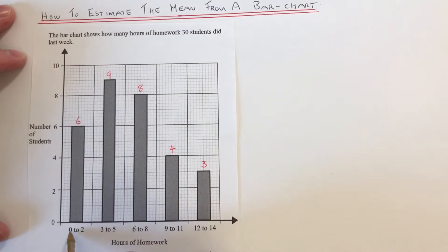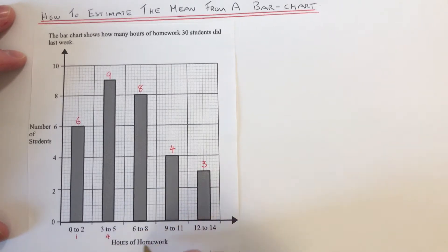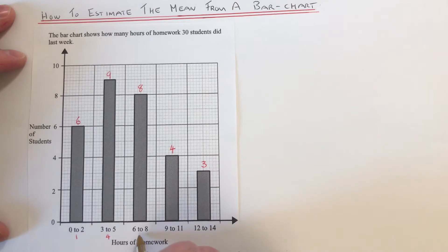The midpoint is the number halfway between the lower interval and the upper interval. So halfway between 0 and 2 is 1, halfway between 3 and 5 is 4, halfway between 6 and 8 is 7, halfway between 9 and 11 is 10, and halfway between 12 and 14 is 13. So what we need to do now is multiply these midpoints by the frequency.